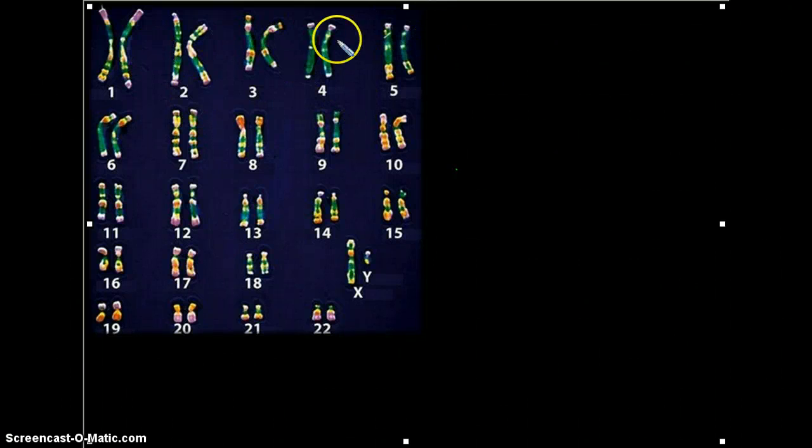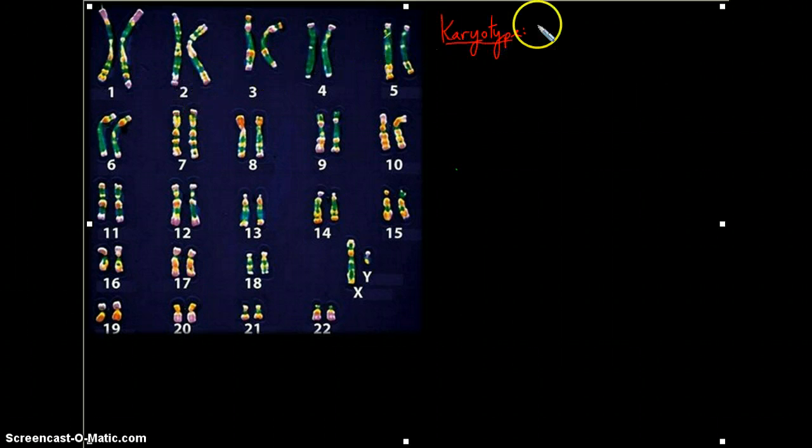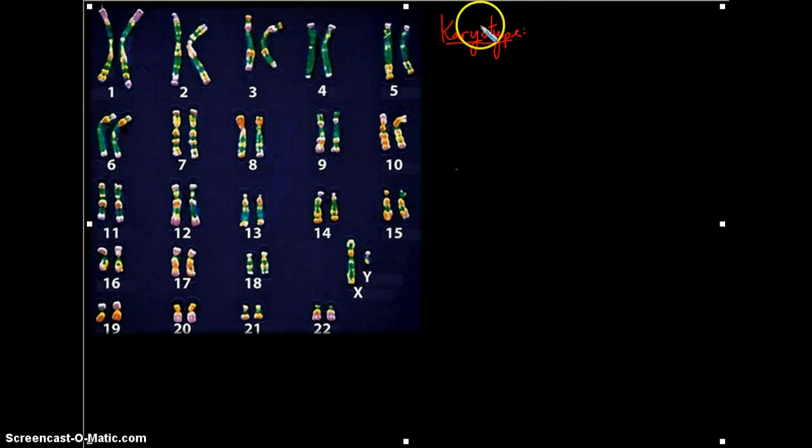Alright, this lovely image that we see here is a karyotype. A karyotype is a picture or image of chromosomes that have been rearranged to form ordered pairs.